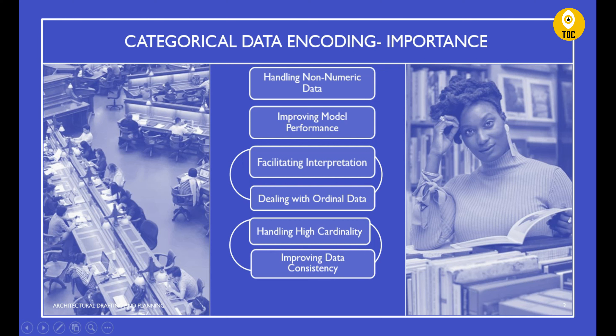Another importance of data encoding is handling high cardinality. High cardinality means a column has a large number of distinct categories. For example, a color column might have 300 distinct values. In that case, encoding methods like target encoding or feature encoding can help reduce dimensionality, making the model more efficient and less prone to overfitting.